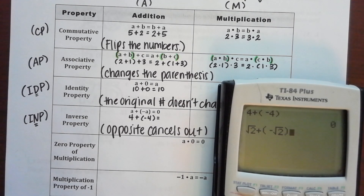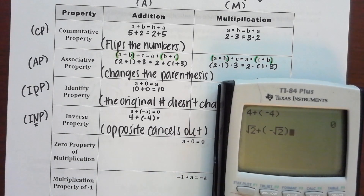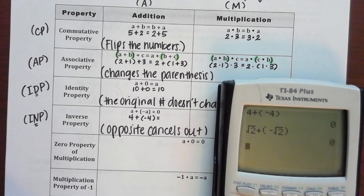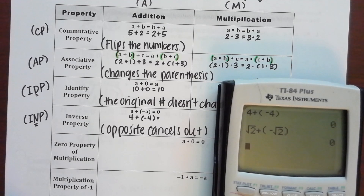If yours doesn't look like mine when you type it in, type it in exactly as I have it. You have to use the right arrow key to get out of the radical. It should do exactly what we want — because we just took the opposite of that number, that's it.